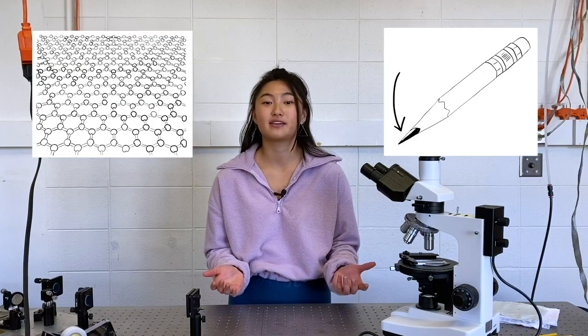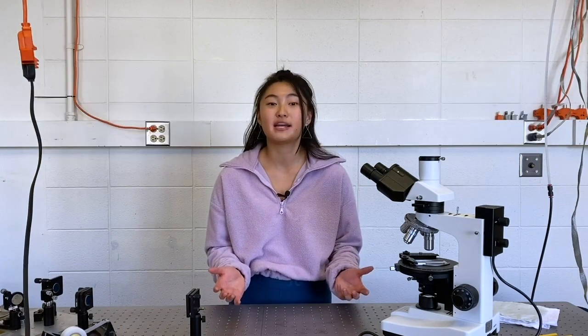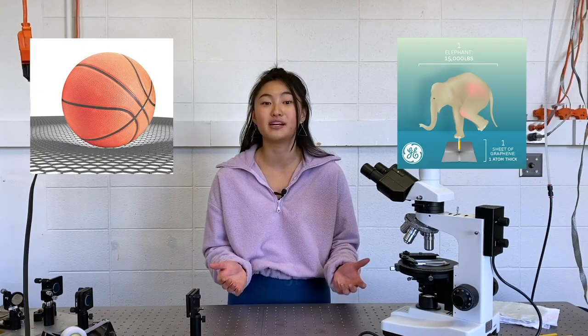Another example of 2D material is graphene. It's one atom thick graphite. Graphene is actually stronger than diamond. One atom thick layer can support a basketball and a saran wrap thick sheet can support an elephant.